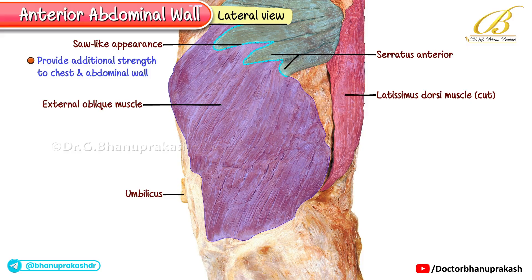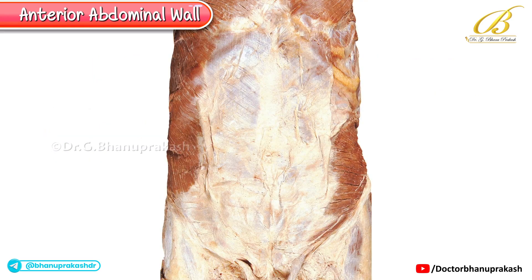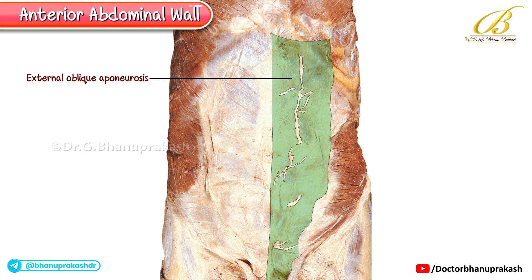Moving downwards, the external oblique muscle inserts along the iliac crest. From here, as we trace it towards the front, it continues as the broad external oblique aponeurosis, which then contributes to the formation of the anterior abdominal wall and the linea alba. In this image, the external oblique muscle has been removed on the left side, but its aponeurosis has been left intact. With the external oblique removed, the underlying internal oblique muscle is now clearly visible on the left, giving us a better appreciation of the layered arrangement of the abdominal wall muscles.